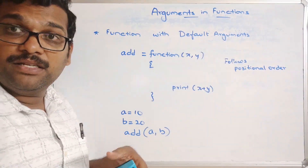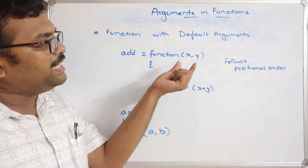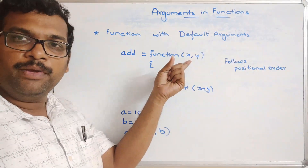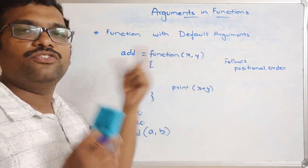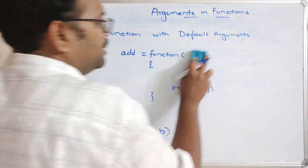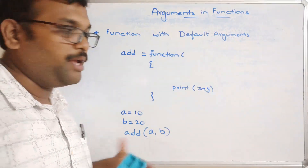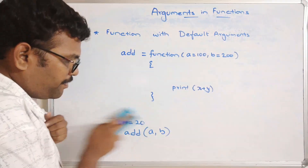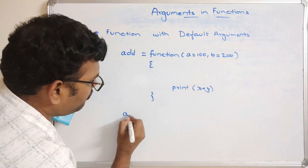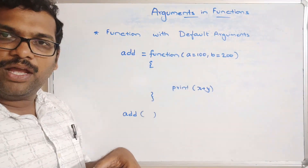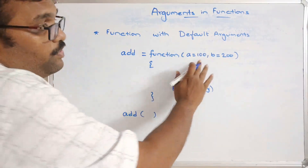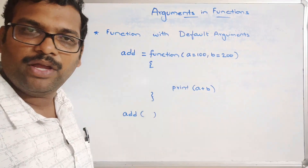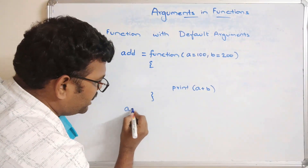The third category is function with default arguments. Default arguments are values assigned inside the function definition. If inputs are sent from the function call, those values are copied to the arguments. If no value is sent from the function call, the default values are used. For example, we set a = 100 and b = 200 as defaults. If we call add without arguments, these default values will be used.